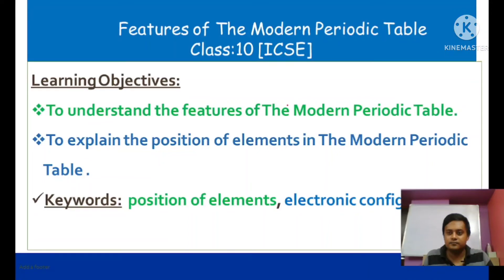Today we will discuss the features of the modern periodic table, a Class 10 ICSE topic. The learning objective is to understand the features of the modern periodic table and to explain the position of elements in it. The keywords are: position of element and electronic configuration.